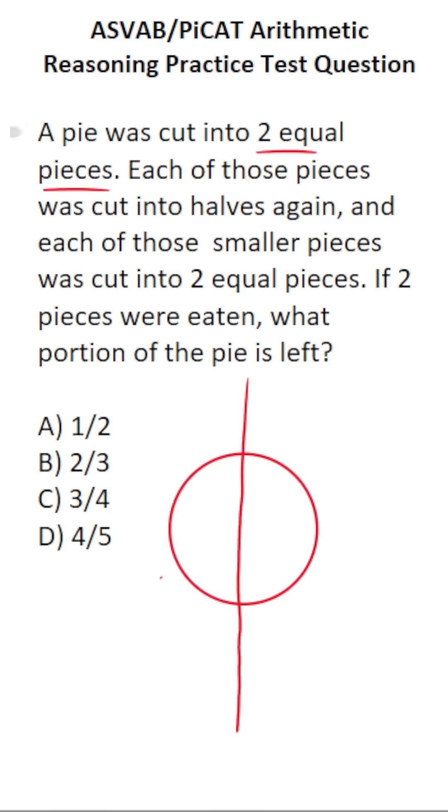Now we have our two equal pieces. Each of those pieces was cut into halves again, so let's go ahead and do that. And each of those smaller pieces was cut into two equal pieces. So we have one, two, three, four smaller pieces. We're going to have to cut all four of them in half again, and that's going to look like this.